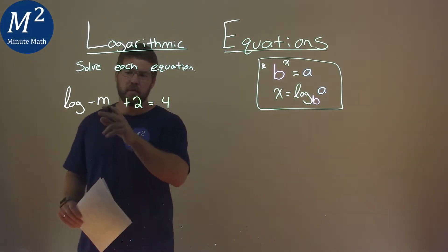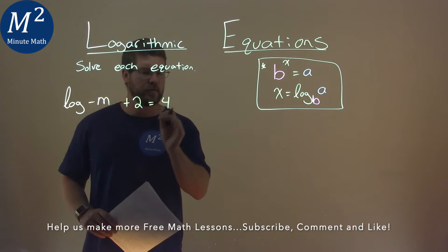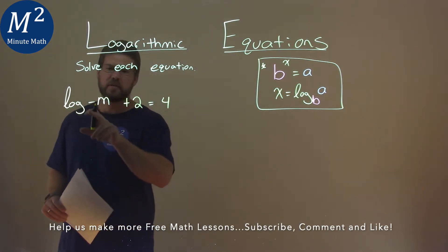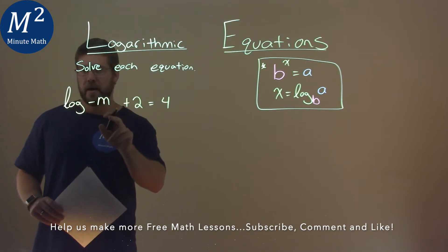We're given this problem right here. Log of negative m plus 2 equals 4, and we have to solve it. Now be careful, this is the log of just the negative m, not the plus 2.